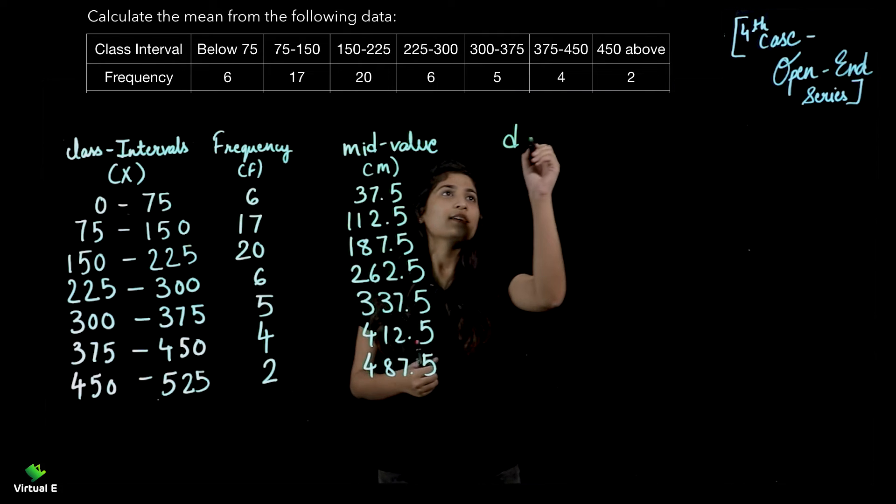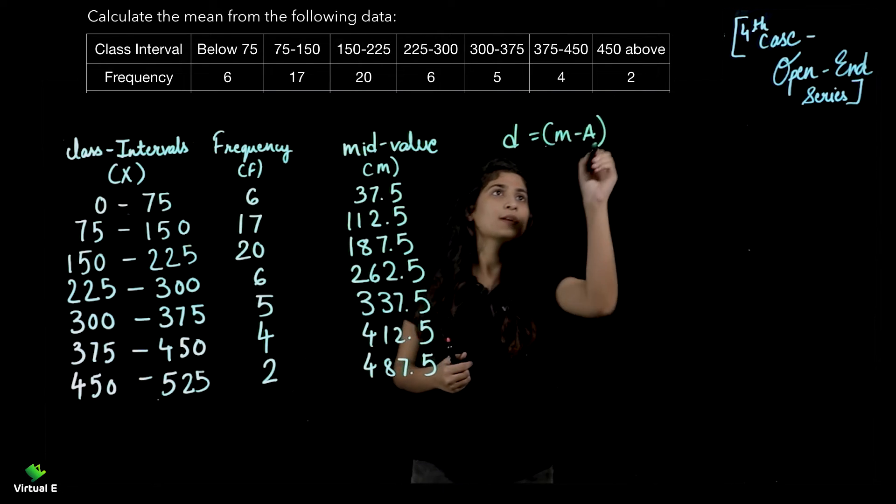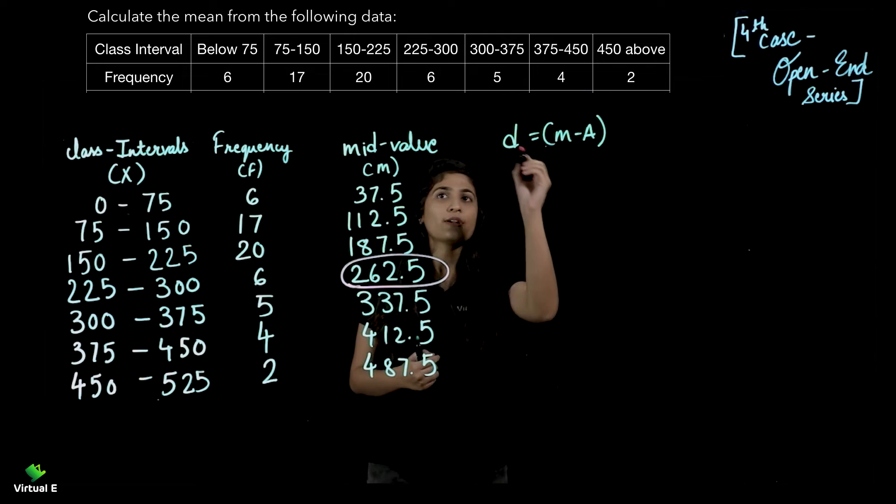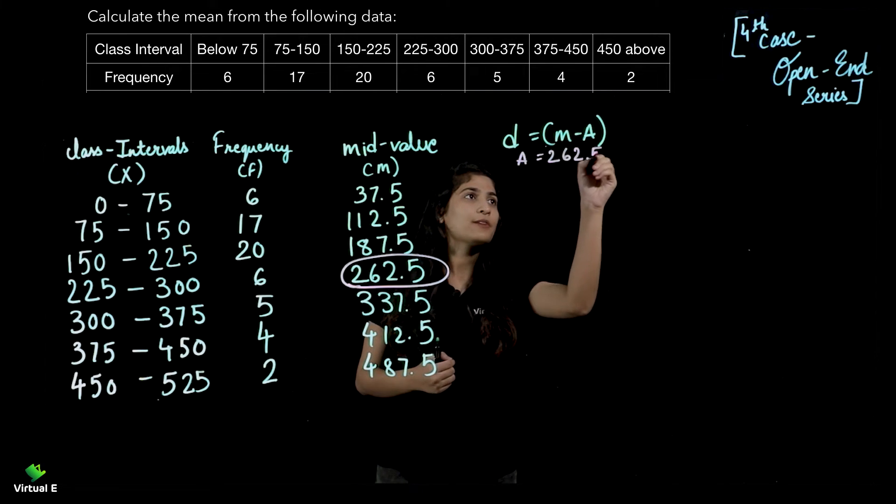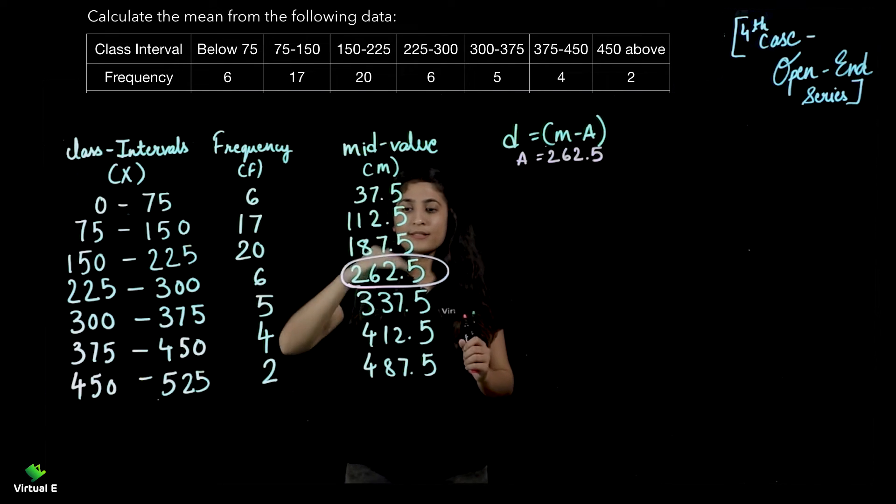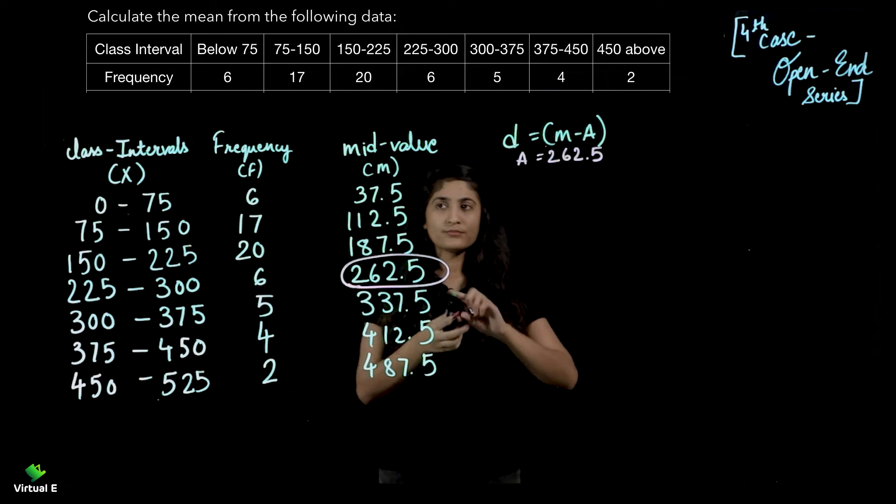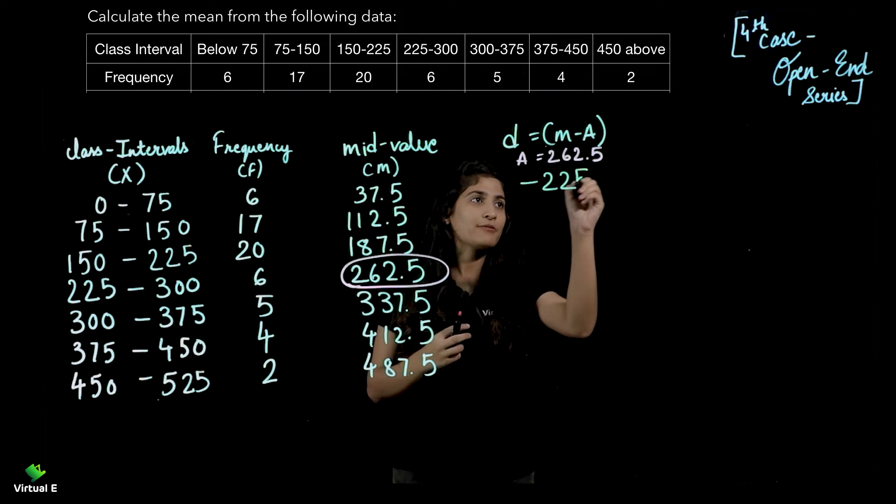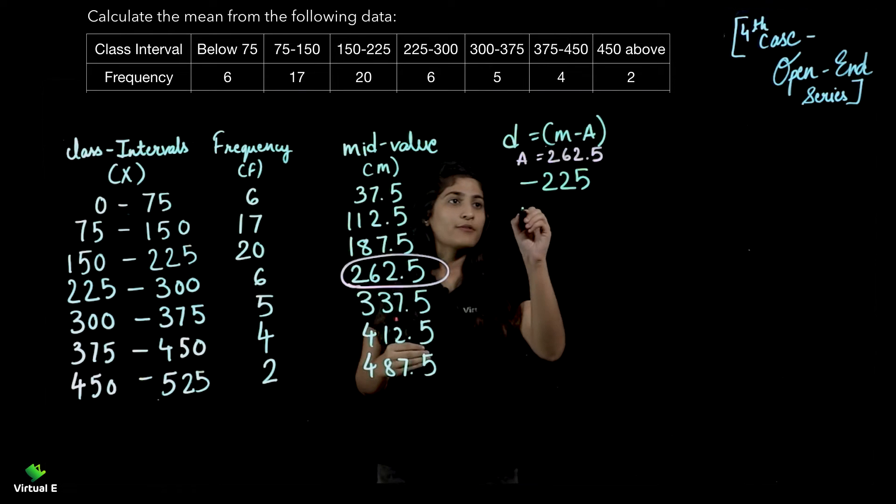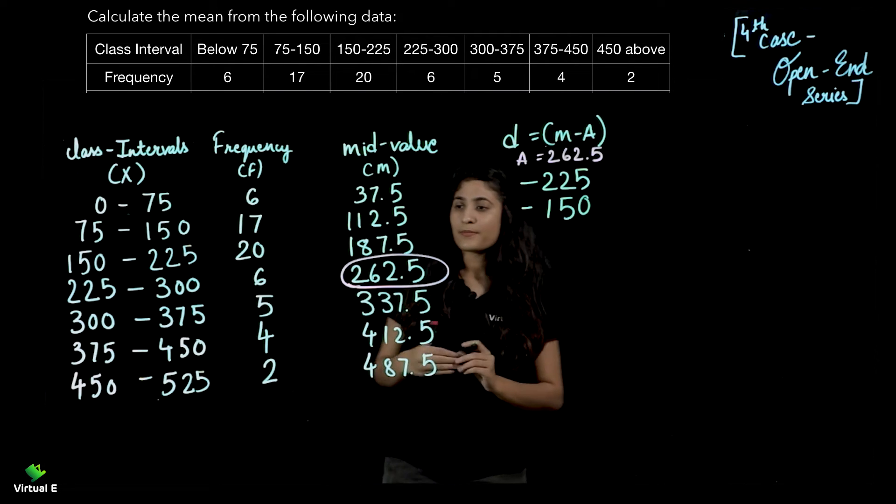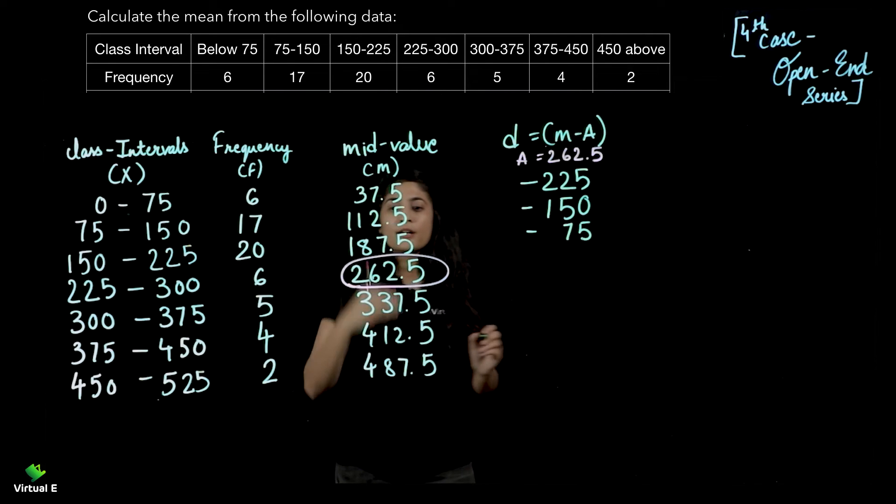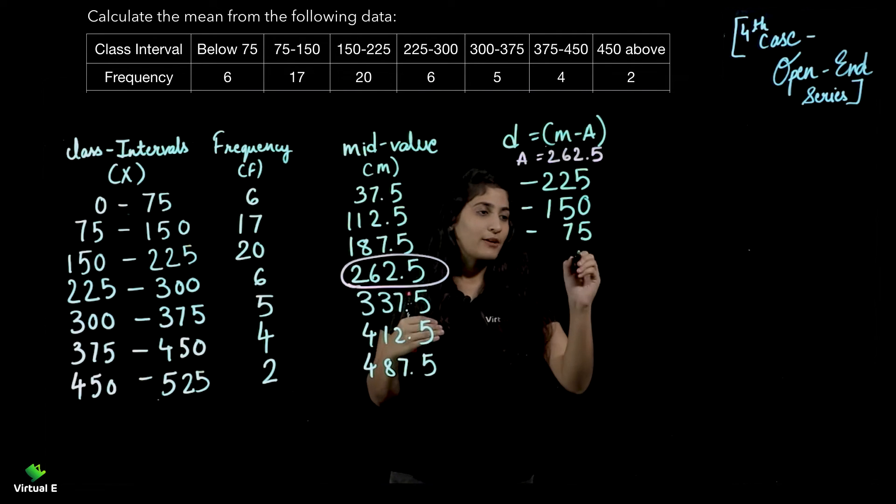Let's calculate D, that is M minus A. Let's assume A, let's say 262.5 is your A. A equals 262.5. Now M minus A: 37.5 minus 262.5 will give you minus 225. 112.5 minus 262.5 will give you minus 150. 187.5 minus 262.5 will give you minus 75. 262.5 minus 262.5 will give you 0.